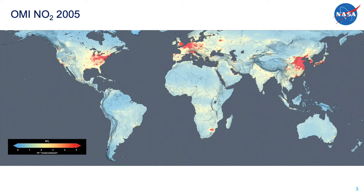Nitrogen dioxide is produced by fossil fuel combustion — activities such as the burning of gasoline or diesel in automobiles and trucks, and combusting natural gas or coal in electric power plants. NO2 is highly reactive and only lasts a couple of hours in the atmosphere, so NO2 maps give us a good picture of where the pollution is generated. NO2 is harmful to human health and reacts to form other harmful pollutants such as ozone and particulate matter.